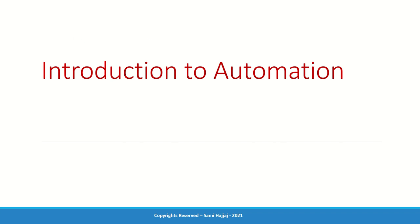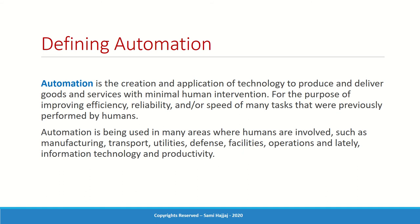The first thing we talk about is automation itself. The very name of the course is Automation and Robotics, so what is automation and why is it distinguished from robotics? In general, automation is the creation of applications or the use of technology to produce and deliver goods or services with minimal human intervention. Automation can be used in many areas: manufacturing, transport, utilities, defense, facilities, operations, and lately even in information technology.